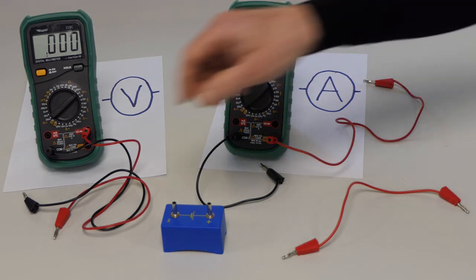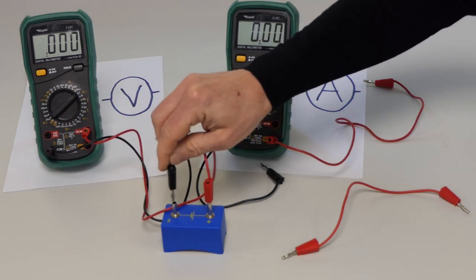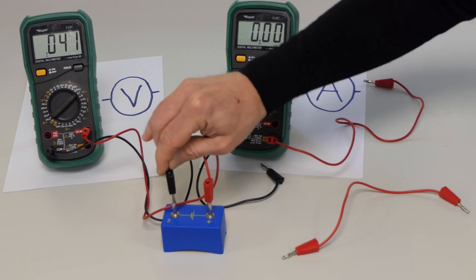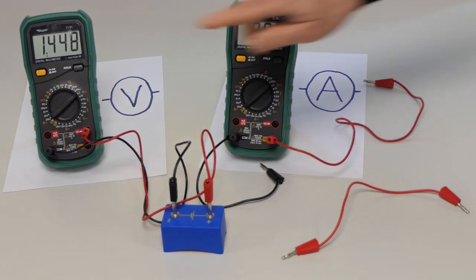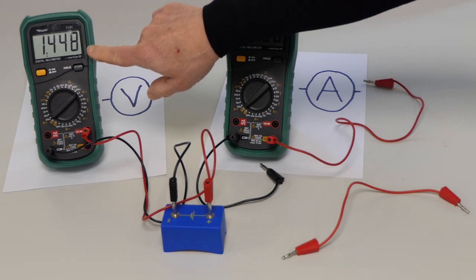Let's start with the voltmeter. You can see when I take no current from the battery I get this voltage.